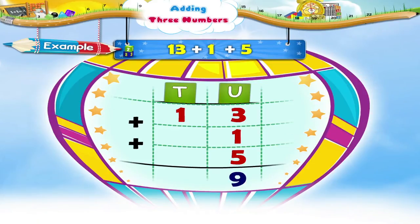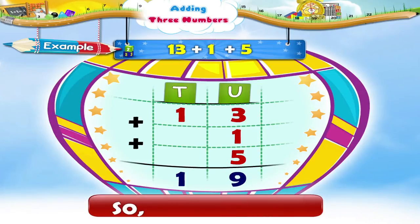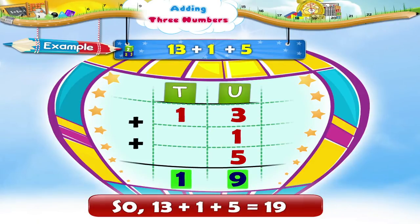Now look at the numbers in the tens place. There is only one, so we write it as it is in the tens place of the sum. So thirteen plus one plus five equals nineteen.